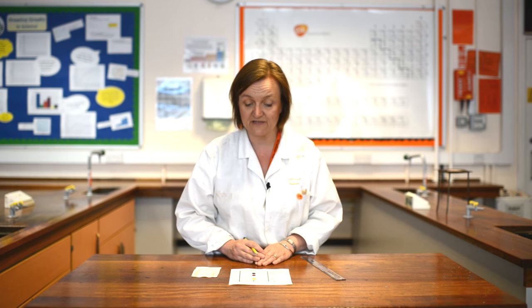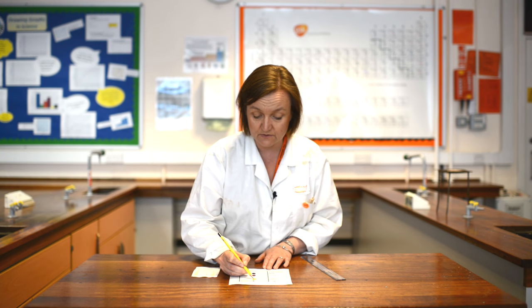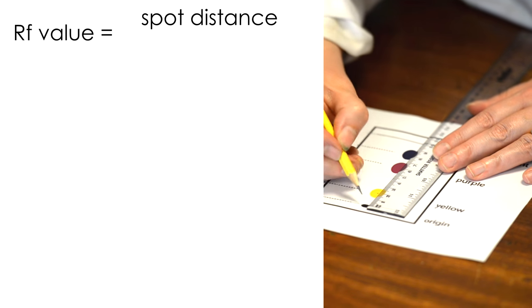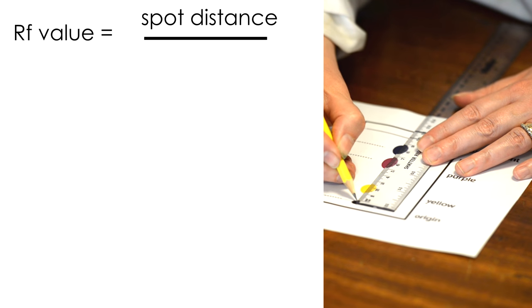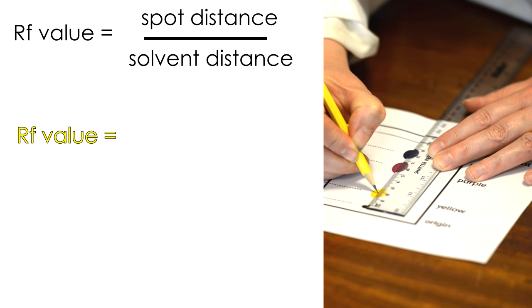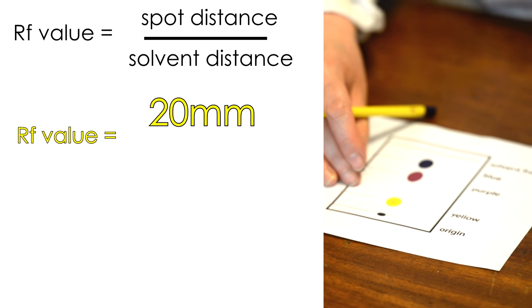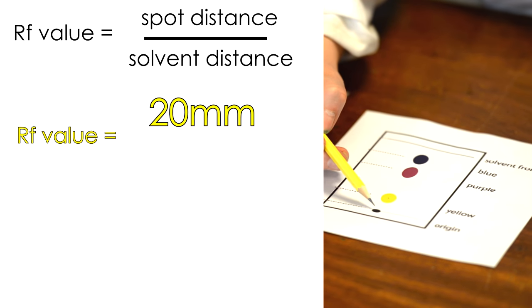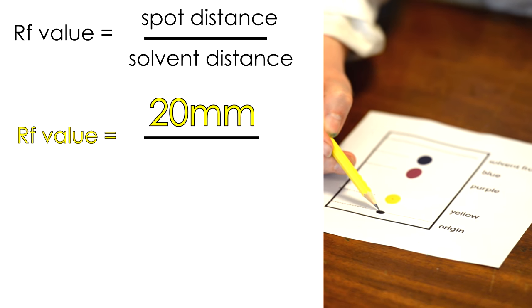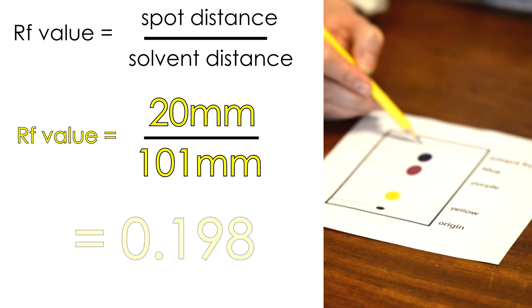To work out the RF value for the individual colors, we take the center of the spot. Here I'm doing the yellow, and we measure the distance the yellow has traveled, again in millimeters. In this case that's 2 centimeters or 20 millimeters. The RF value is then calculated by the distance the color has traveled, 20, divided by the distance that the solvent has traveled, 101 millimeters.